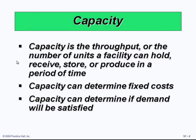To understand how to satisfy customer demand we need first to define capacity. Capacity is the throughput or the number of units a facility can hold, receive, store, or produce in a period of time. Looking at the definition, we recognize some of the reasons why capacity is an issue. For example, capacity can determine fixed costs, and it determines if demand will be satisfied — whether we can produce the proper amount the market needs.